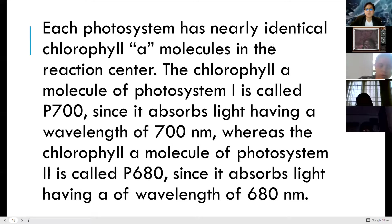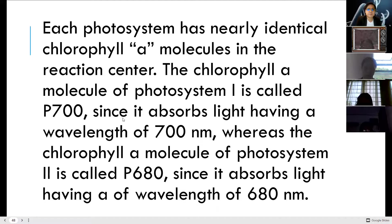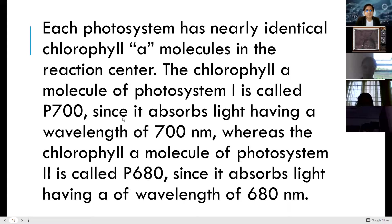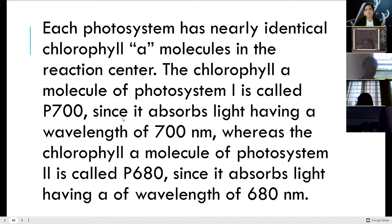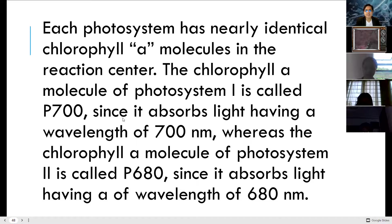Each photosystem has nearly identical chlorophyll a molecules in the reaction center. The chlorophyll a molecule of photosystem 1 is called P700 since it absorbs light at a wavelength of 700 nanometers. The chlorophyll a molecule of photosystem 2 is called P680 since it absorbs light at a wavelength of 680 nanometers. So PS1 has P700 and PS2 has P680.